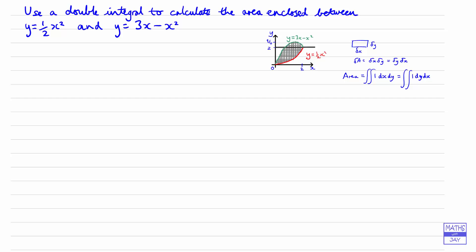Let's start with the easier one. When we've got y equals a half x squared, then x squared is going to be equal to 2y, so x is going to be equal to the square root of 2y. We've only got the right-hand side of the curve y equals a half x squared, so we want the positive values. Normally you'd have plus or minus, so x equals the square root of 2y, making sure to include the y inside the square root sign — no need for any negative.